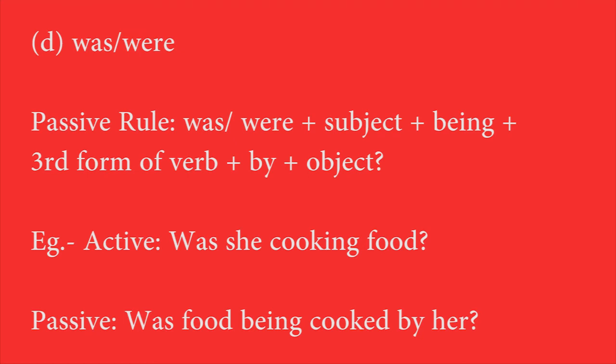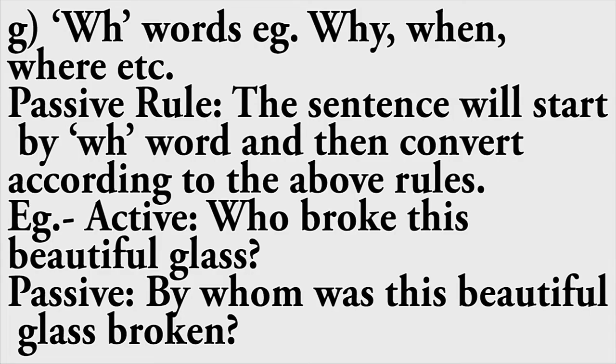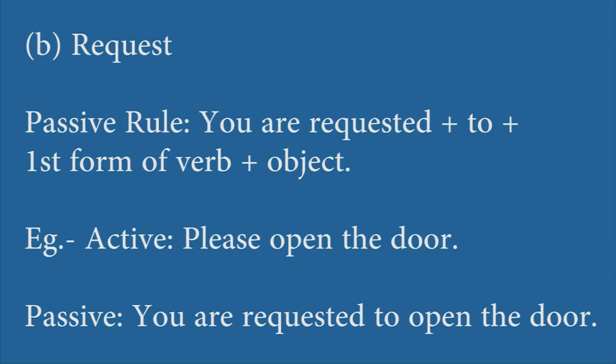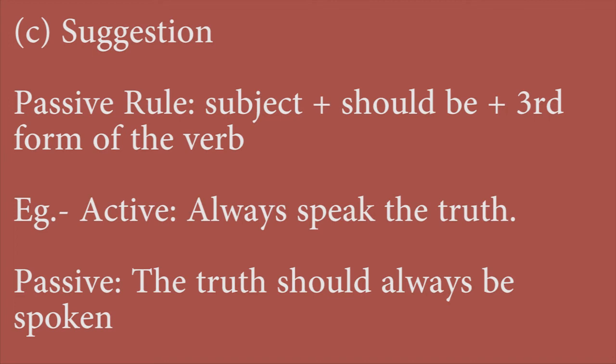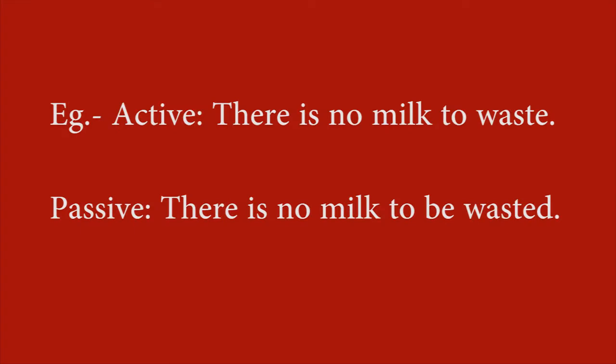For example: can the situation be controlled by her? Who broke this beautiful glass? — By whom was this beautiful glass broken? Shut the window — it's an order, so we say: let the window be shut. Please open the door — you are requested to open the door. Always speak the truth — it's a suggestion, so: the truth should always be spoken. Work hard — it's advice, so: you are advised to work hard. There is no milk to waste becomes: there is no milk to be wasted.